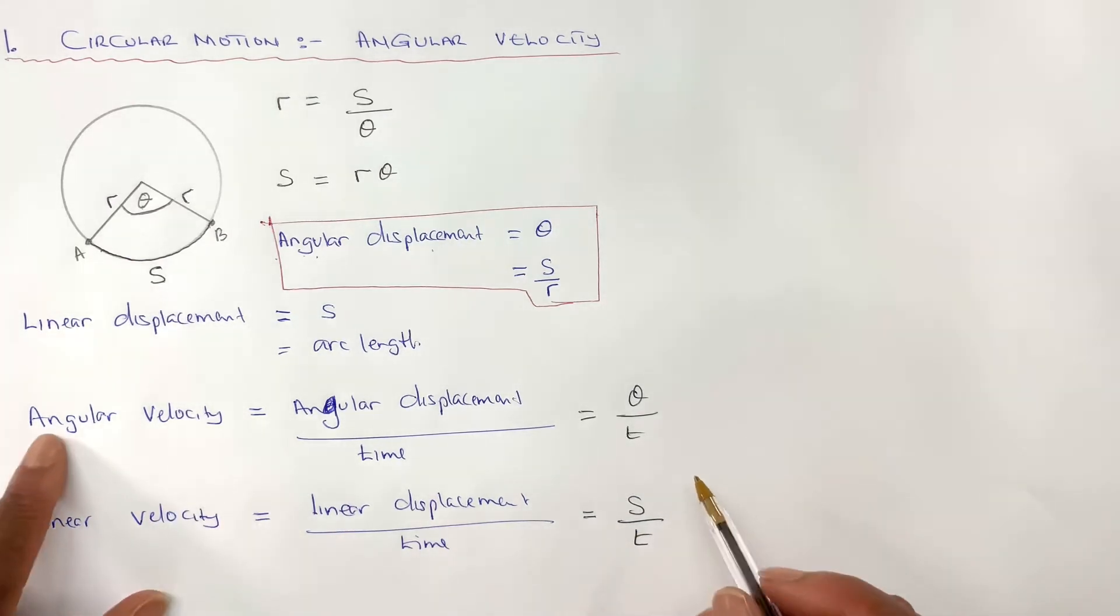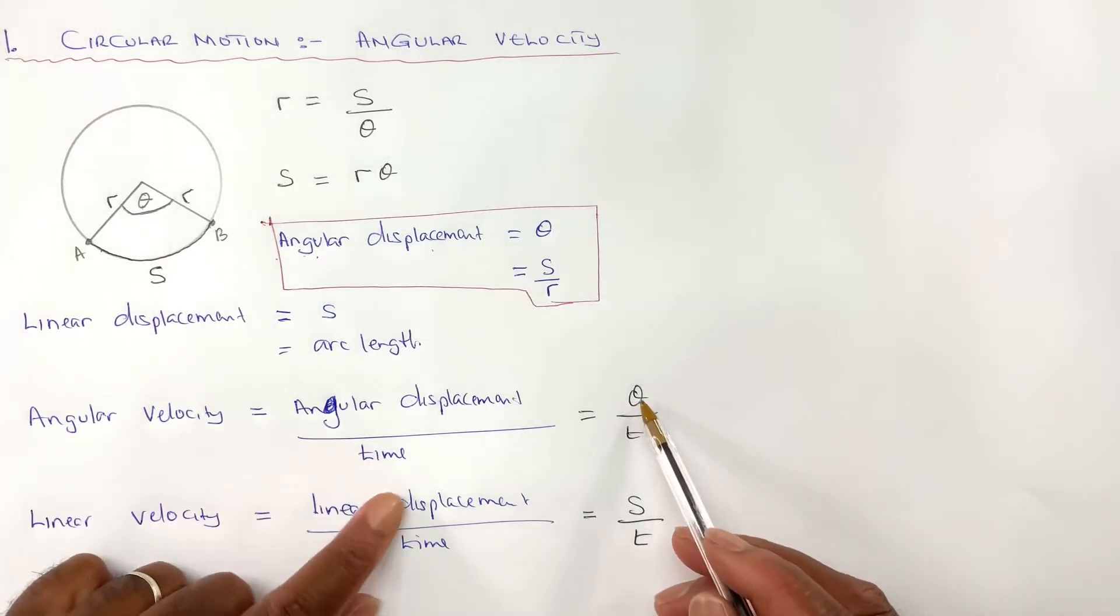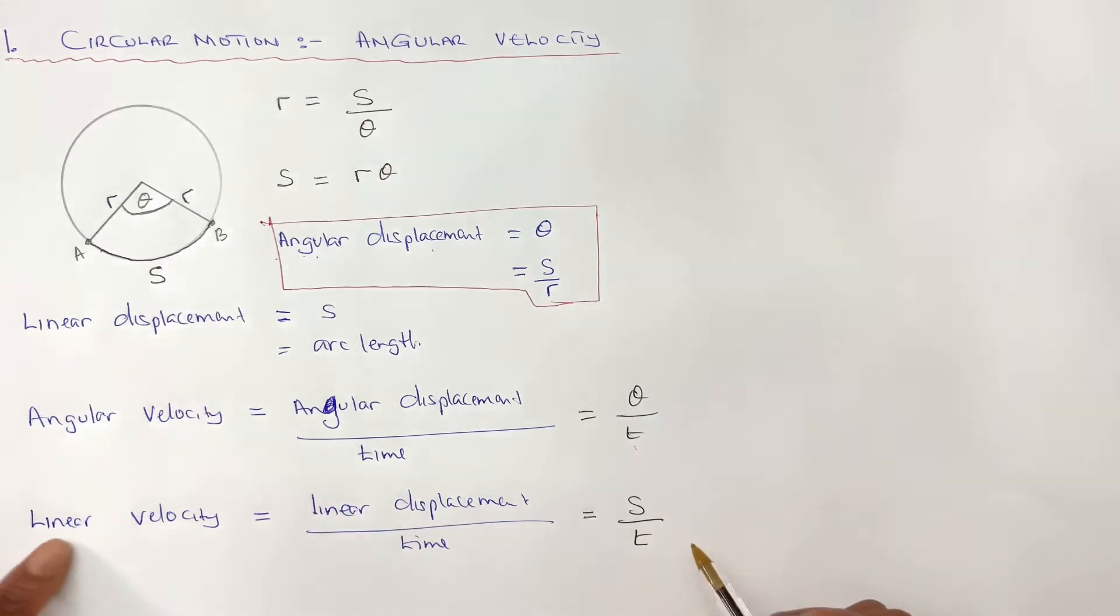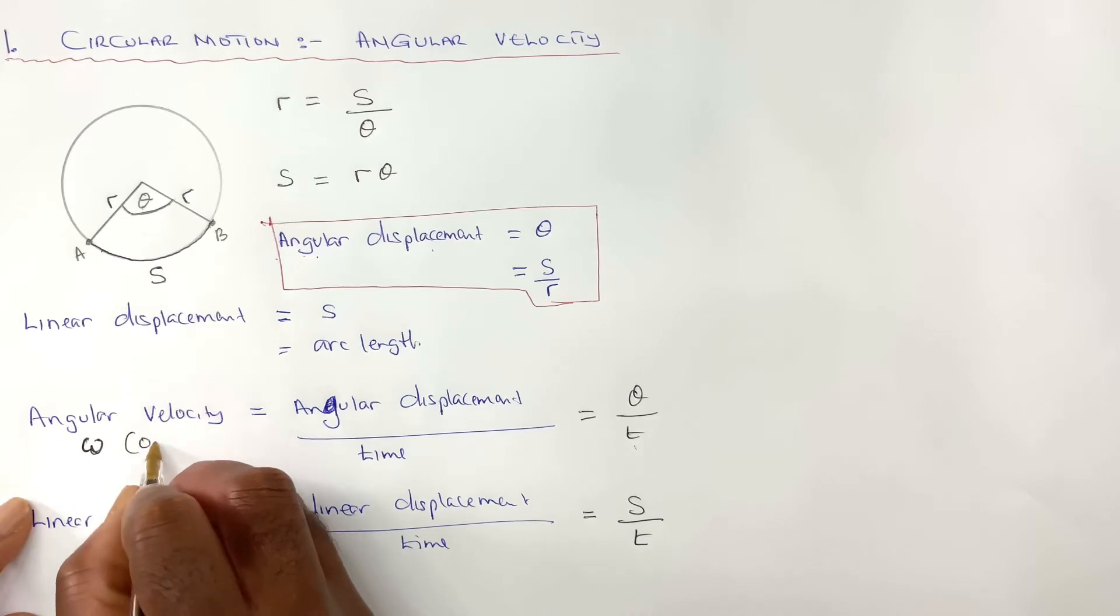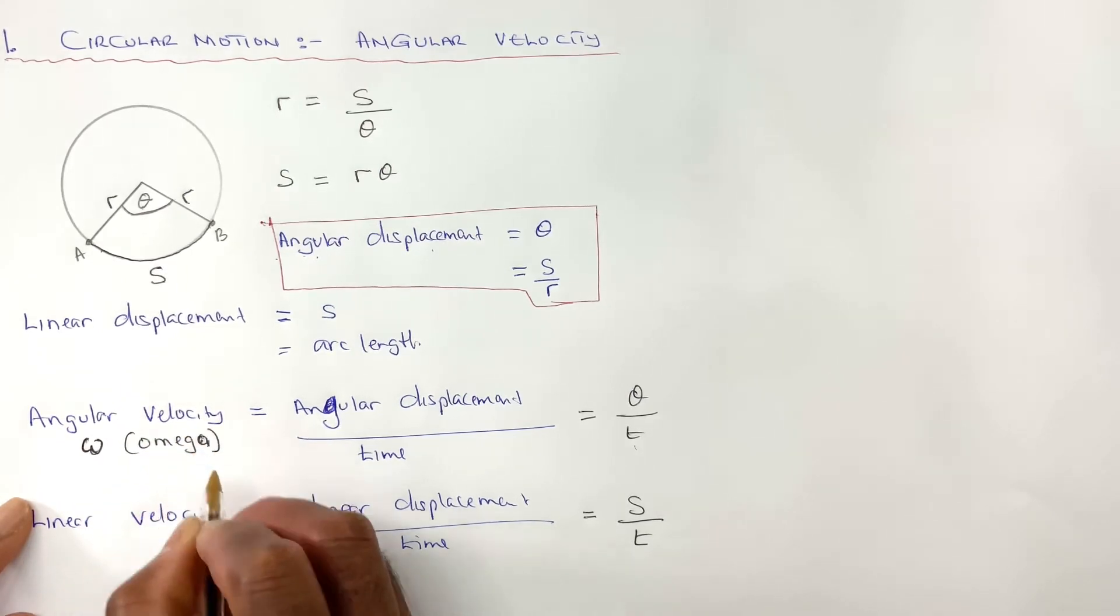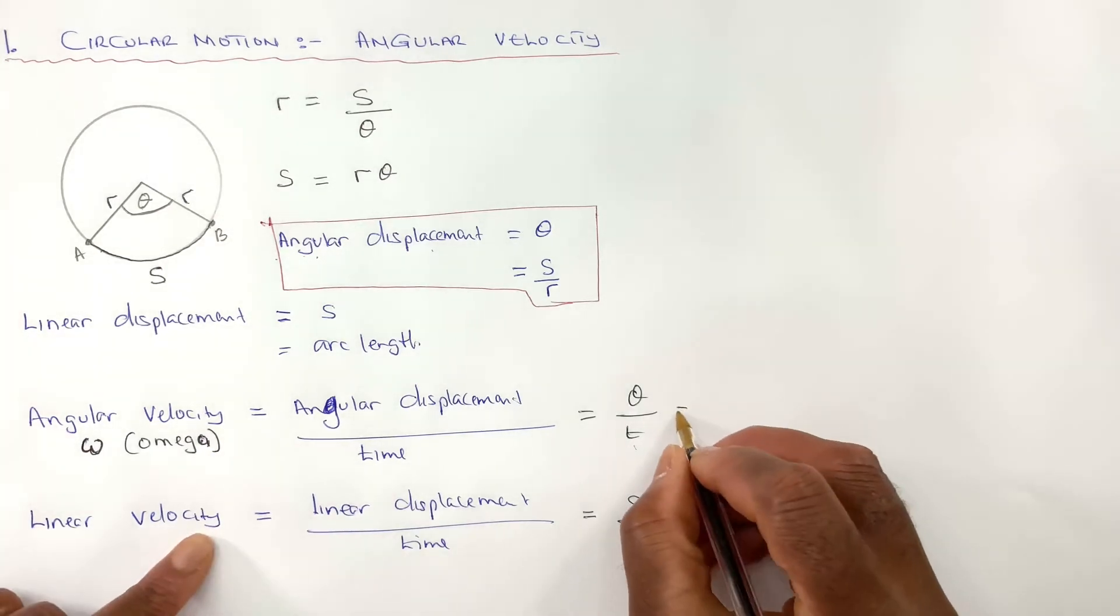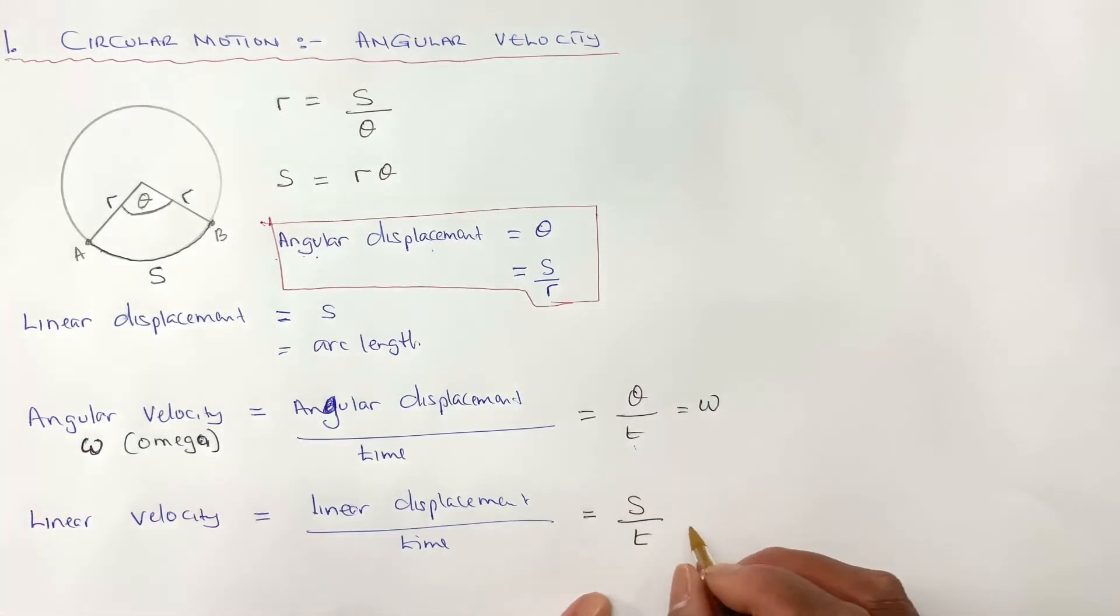And the angular velocity is theta over T. Angular velocity has a symbol omega. That's not W, but omega. Omega is a Greek letter. So that equals omega, and that equals V for velocity.